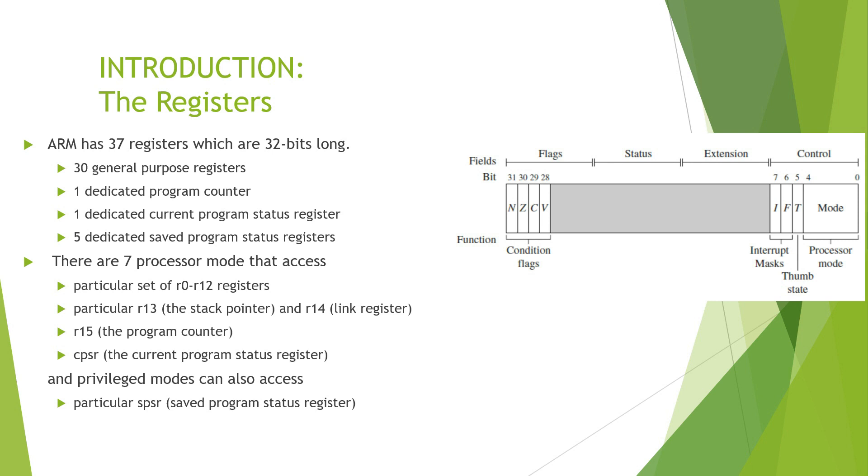Registers for a particular set, R13 is for stack pointer, R14 is a link register, R15 is a program counter and we have CPSR. The CPSR is divided into conditional flags which are negative flag, zero flag, carry flag and the overflow flag. We have interrupt mask and the processor mode.